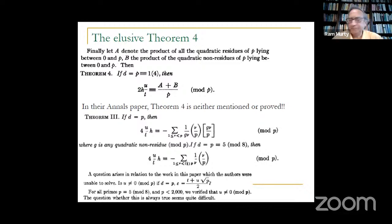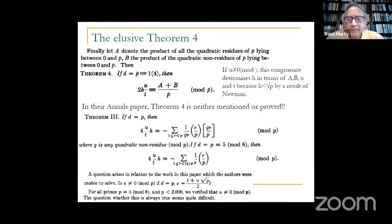Why are we interested in the condition U ≢ 0 mod P? If U is not zero mod P, then this congruence actually determines the class number in terms of A, B, U, and T, since U and T are determined from the fundamental unit. There are beautiful algorithms going back to Brahma Gupta and Bhaskaracharya that give the fundamental unit explicitly, so U and T can be algorithmically determined quickly. Determining the quadratic residues and non-residues can also be done algorithmically, and then you solve the congruence to find H mod P. That value mod P will be the class number, since we know H is less than √P by a famous result of Newman.